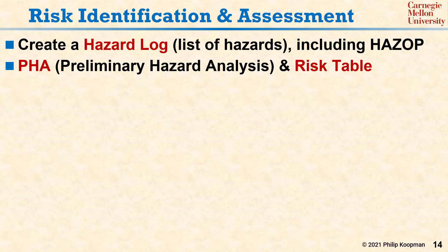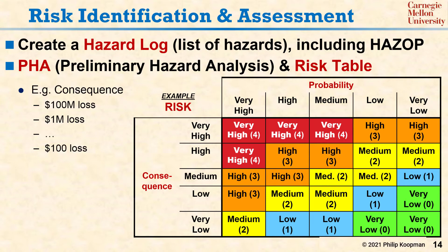Here is an example risk table. In this table, the rows correspond to the consequence severity if a problem does occur. While this risk table is generic, it's better to make the consequence more concrete in a way that specifically relates to your project. For example, you might decide that a very high consequence is a $100 million loss, and a very low consequence is only a $100 loss that happens once in a while across the entire product fleet.